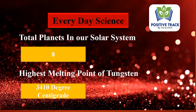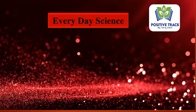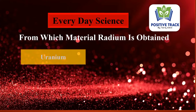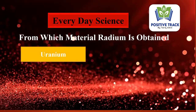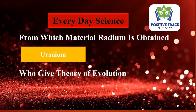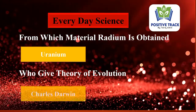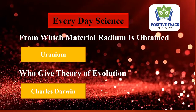The melting point of tungsten is 3410 degrees centigrade. From which material is radium obtained? It's uranium. Who gave the theory of evolution? Charles Darwin gave the theory of evolution.